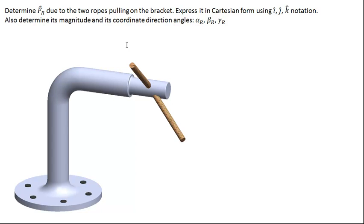In this problem we want to determine the resultant force due to the two ropes pulling on the bracket. We'll want to express it in Cartesian form using i, j, k hat notation, and we'll also want to determine its magnitude and its coordinate direction angles, alpha, beta, and gamma.